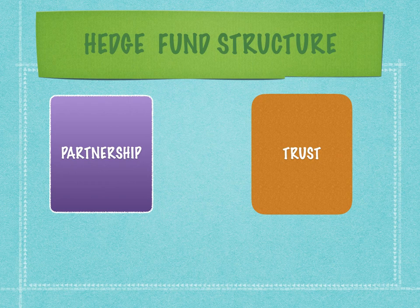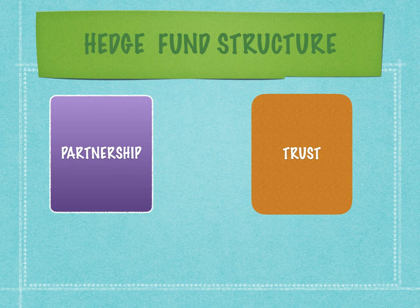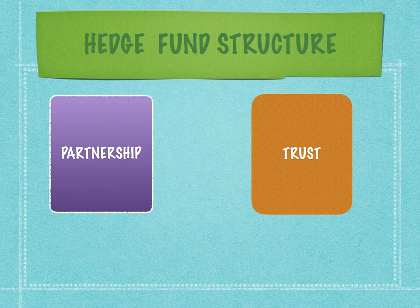All fund accounting and administration jobs in India will deal with terms like this. A partnership is where there is a partnership agreement which governs the capital contribution of the partners, and also governs the allocation of profits as well as other entitlements in the fund. A hedge fund could also be structured like a trust — if structured like a trust, then there is something called unitization of the contribution.